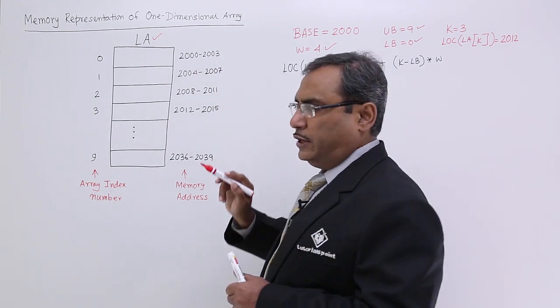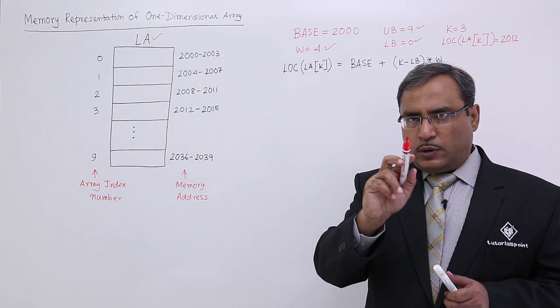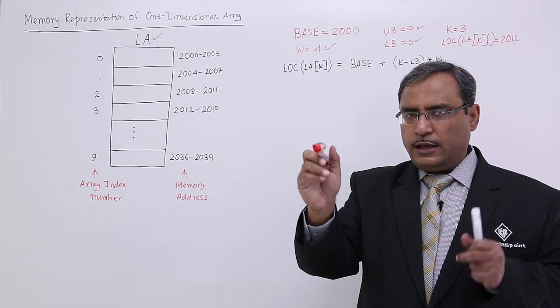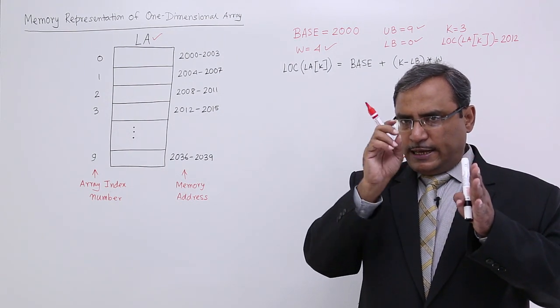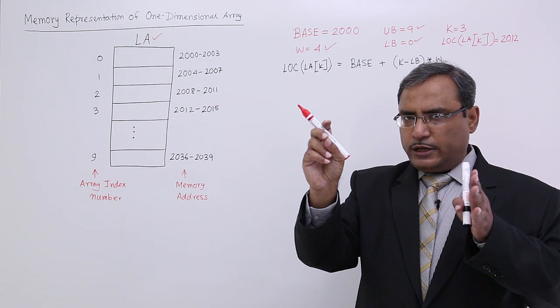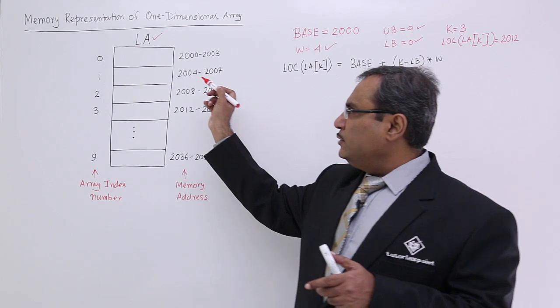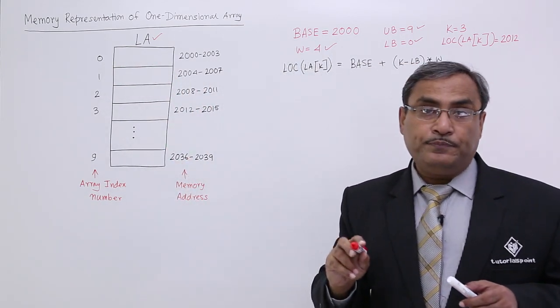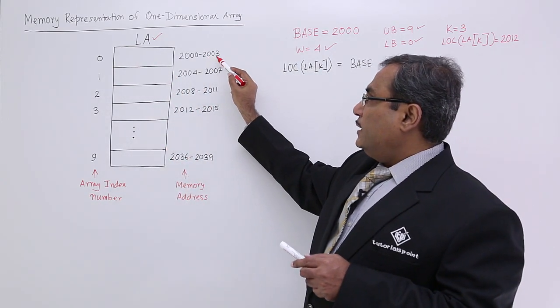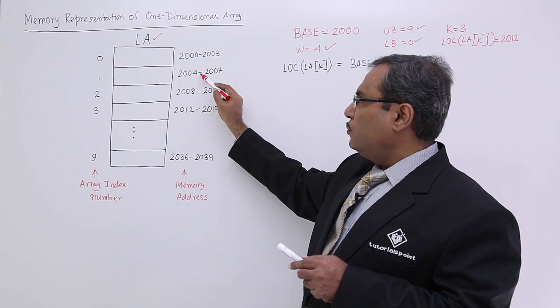From 2000 to 2003: 2000, 2001, 2002, 2003. That means 4 locations. Each location of the computer's memory is containing 1 byte of information. Four locations means 4 bytes and that is corresponding to the index 0. It is getting terminated at 2003.